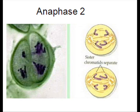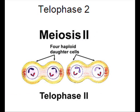Asexual reproduction creates clones that have the same DNA. This is a disadvantage because one weakness can kill all offspring. However, it is advantageous in that you never need a mate. To be continued.